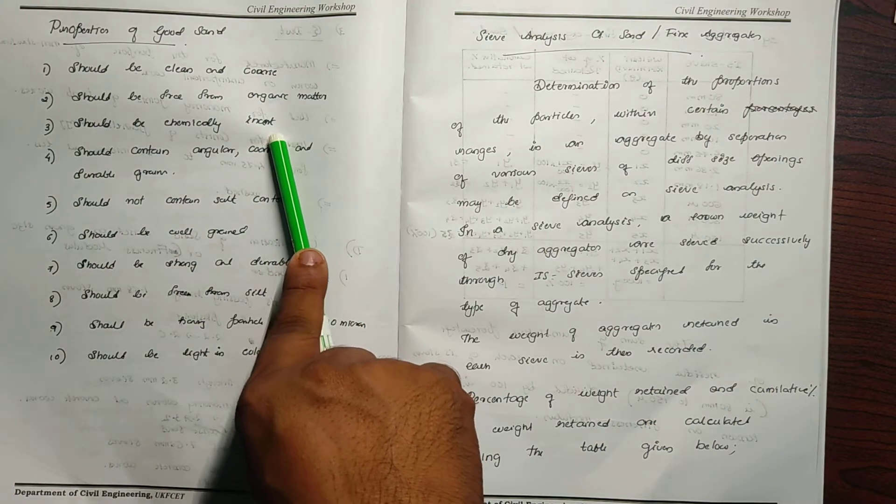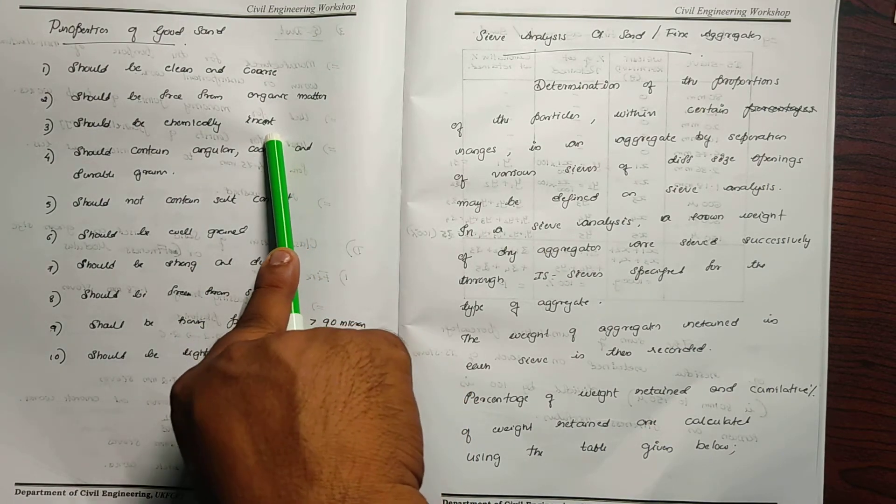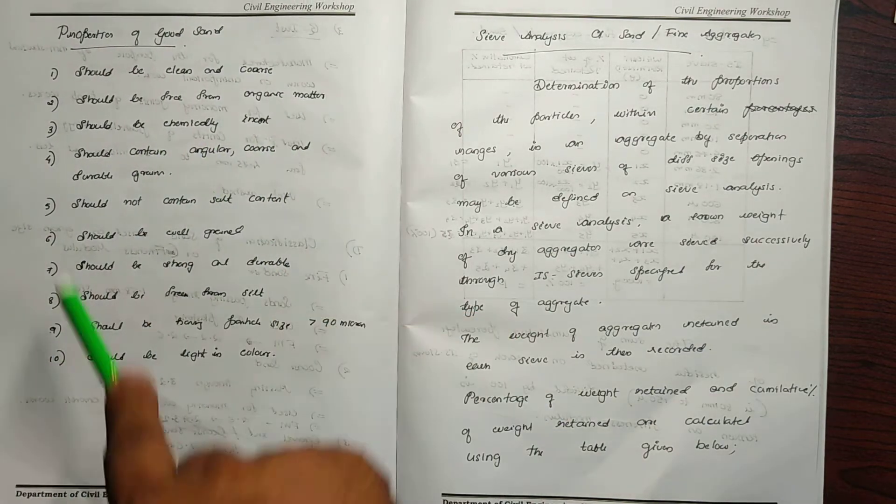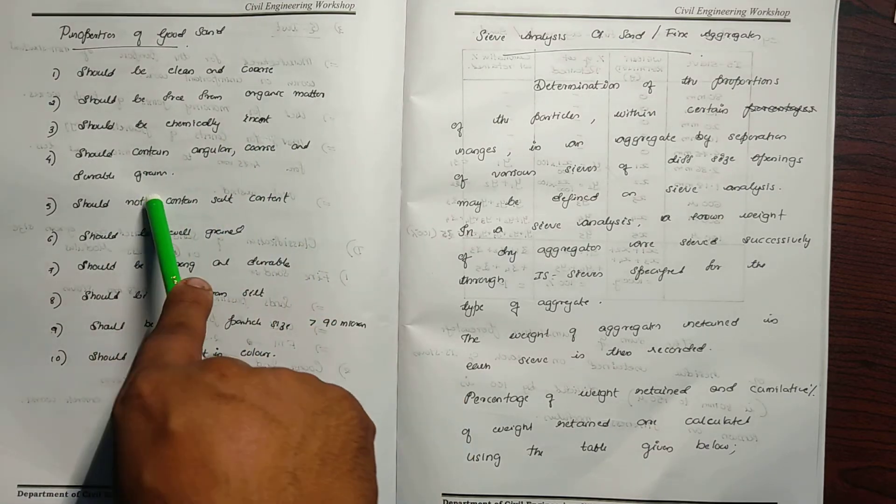Sand should not contain salt content. It should contain angular, coarse, and durable grains.